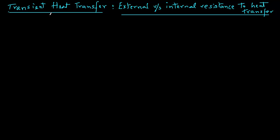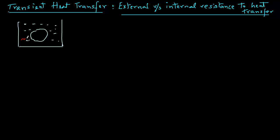Let's consider a simple experiment. We take a solid object and we drop it into, let's say, heated water. So heat will be transferring from the water into this solid object. As the heat transfers from the hot water into the object, in its path, first there is a resistance to heat transfer right on the surface of that object, still in the surrounding fluid. And then there will be resistance to heat transfer internally as heat moves from the surface to the center of that object.